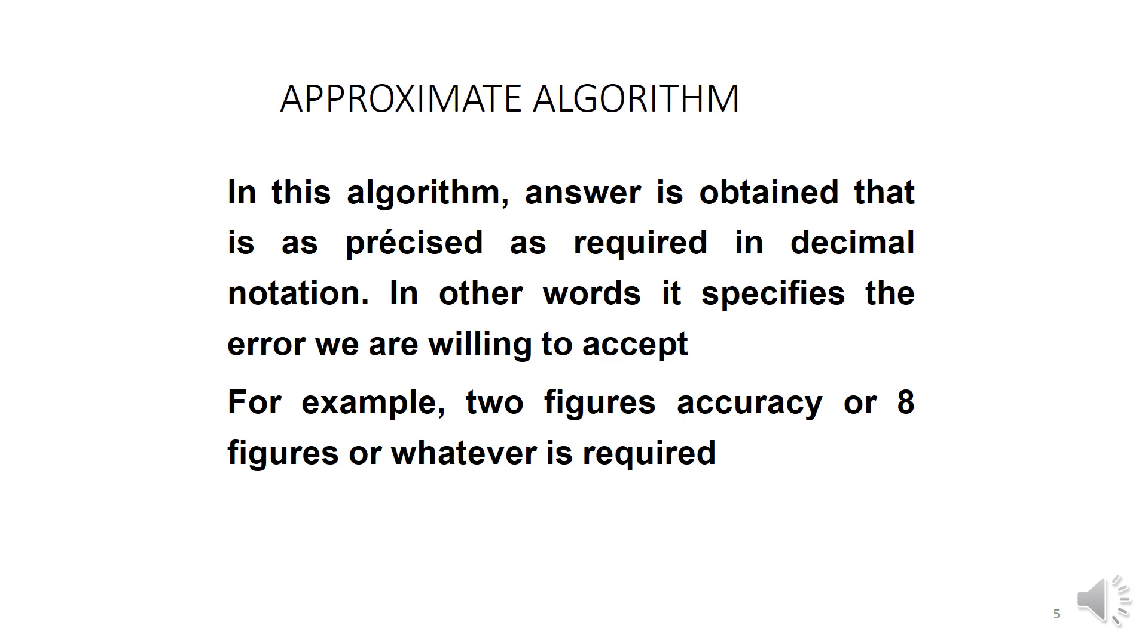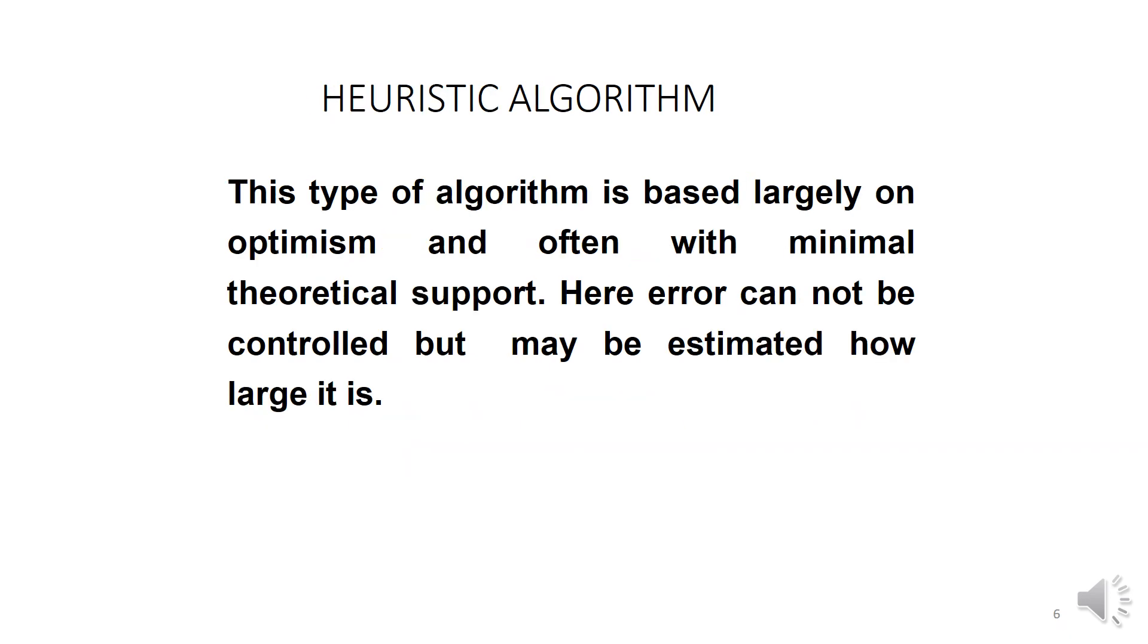Then we will accept that error willingly because at the beginning we have specified that error limit, whether 2 figures, 3 figures, 4, or 8. These are our optimization-based algorithms. These are the errors that when they start to change, then controlling them will be very difficult.